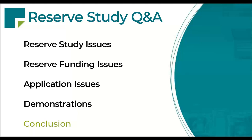Next question: we are one of two condo associations that share infrastructure, roads, and sewer system with a for-profit company and their rental apartments. Is this common, and is there a precedent for splitting costs and capital expenses? Boy, that sounds complicated. So we have two condo associations and a for-profit company with their rental apartments — three kinds of facilities. Is it common? The answer is no, it's not common.